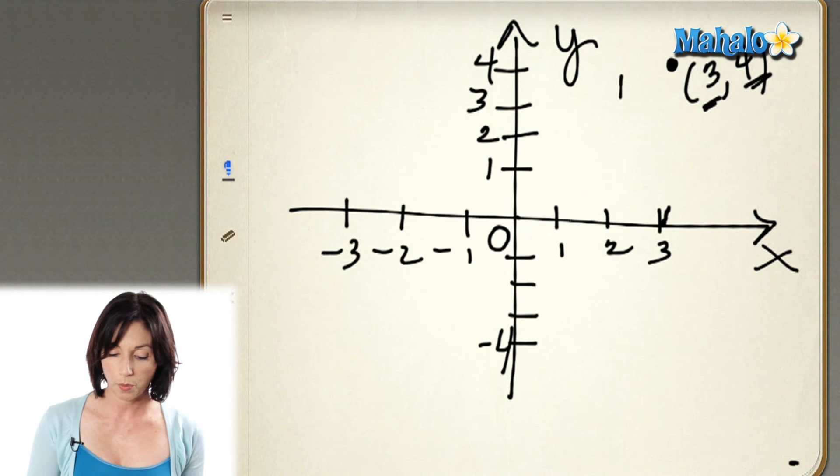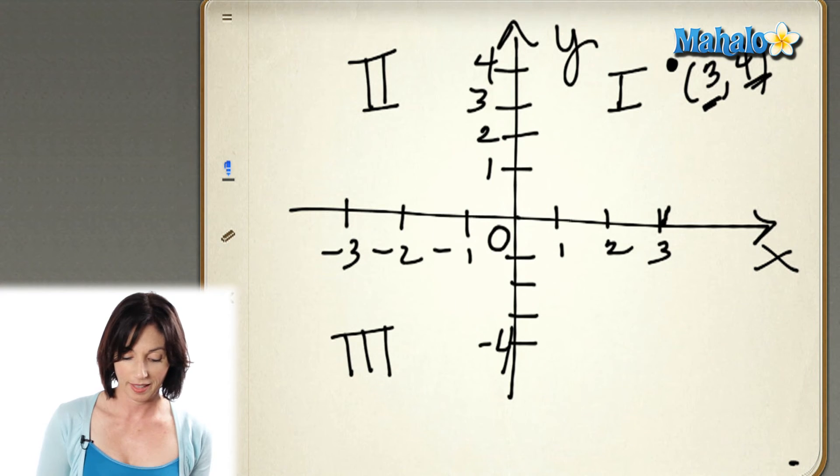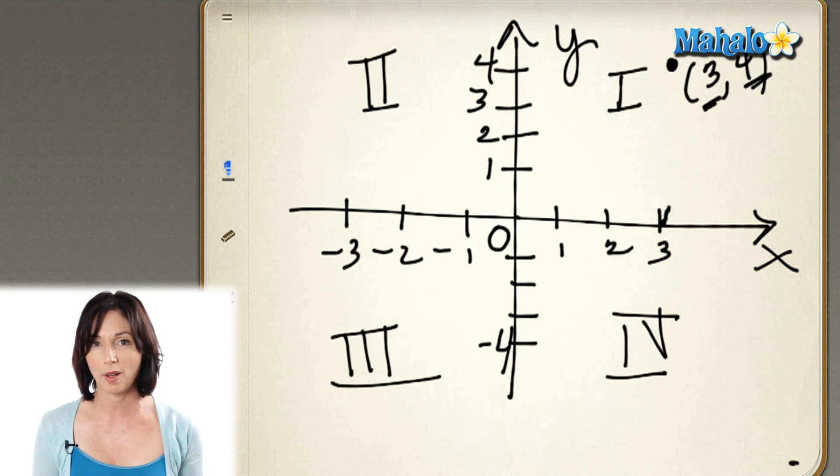Now, you can actually tell where a point will be on the coordinate plane, just by looking at the signs. The coordinate plane is split into 4 quadrants. This is quadrant 1, this is quadrant 2, this is quadrant 3, and this is quadrant 4. So they go counterclockwise, they're numbered counterclockwise.